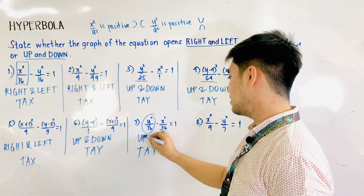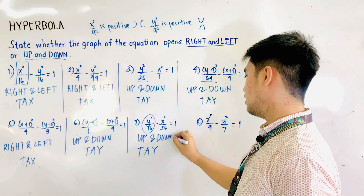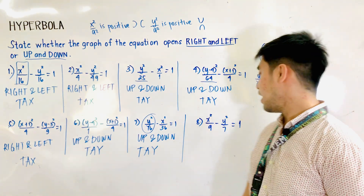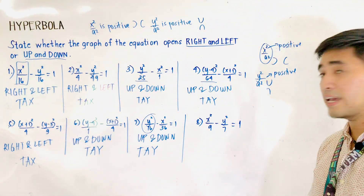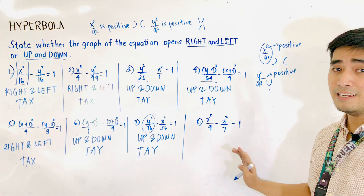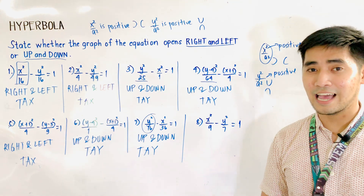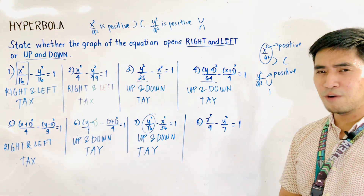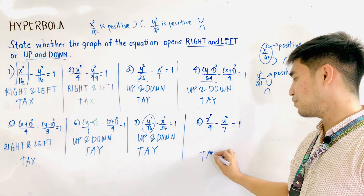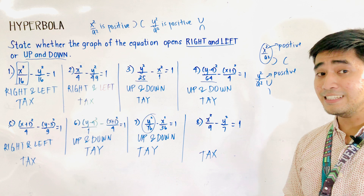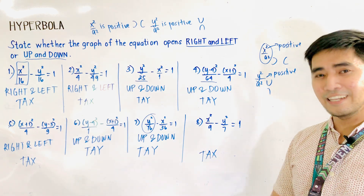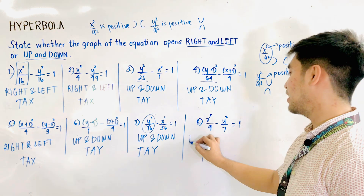For the last example, we are given x squared over 9 minus y squared over 7 is equal to 1. Let us first determine the transverse axis. The transverse axis is x. Therefore, that is TAX. And if it is TAX, therefore we could finally say that the nature of the graph of the hyperbola is right and left.